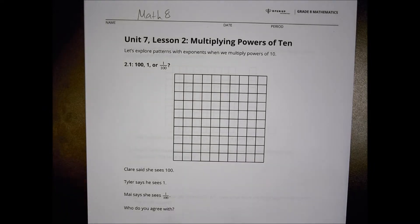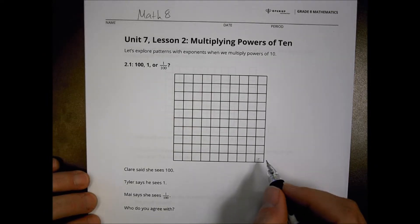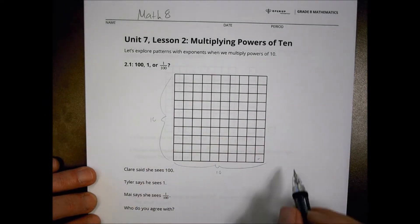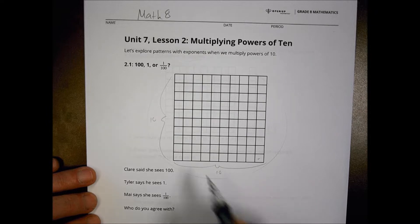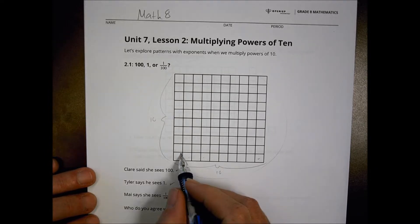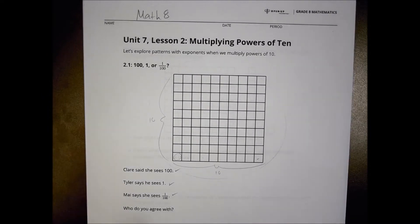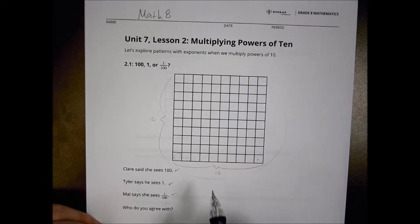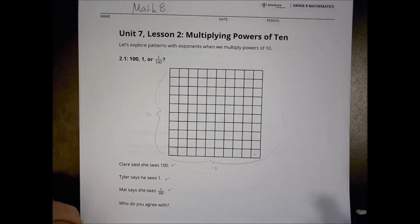We have a little picture to start off with here, and it says that Claire says she sees 100, Tyler says he sees 1, and Mae says she sees 1 out of 100. Who do you agree with? When you take a look at that picture, what is it that you see? You might notice we have little squares in here. If you count them up, you end up having a length of 10 over here and a height of 10 over there. So you could see how Tyler might say there's just one large group, Mae saying she sees 1 out of 100, or Claire saying 100 for each little tiny square. They all are very different numbers, but they relate to one another because they're powers of 10.